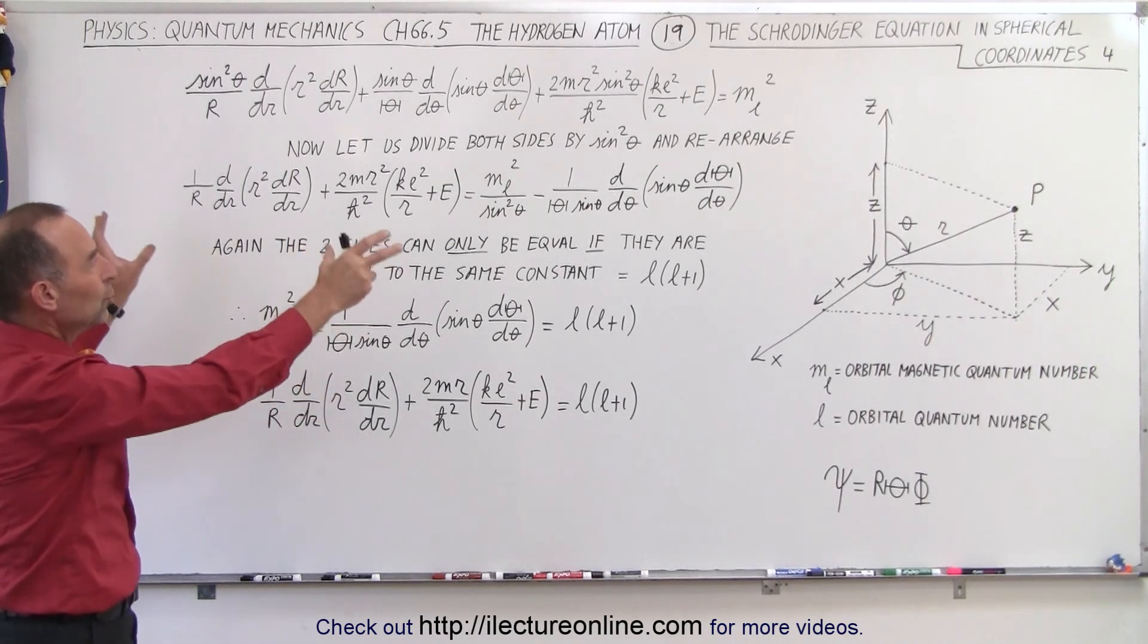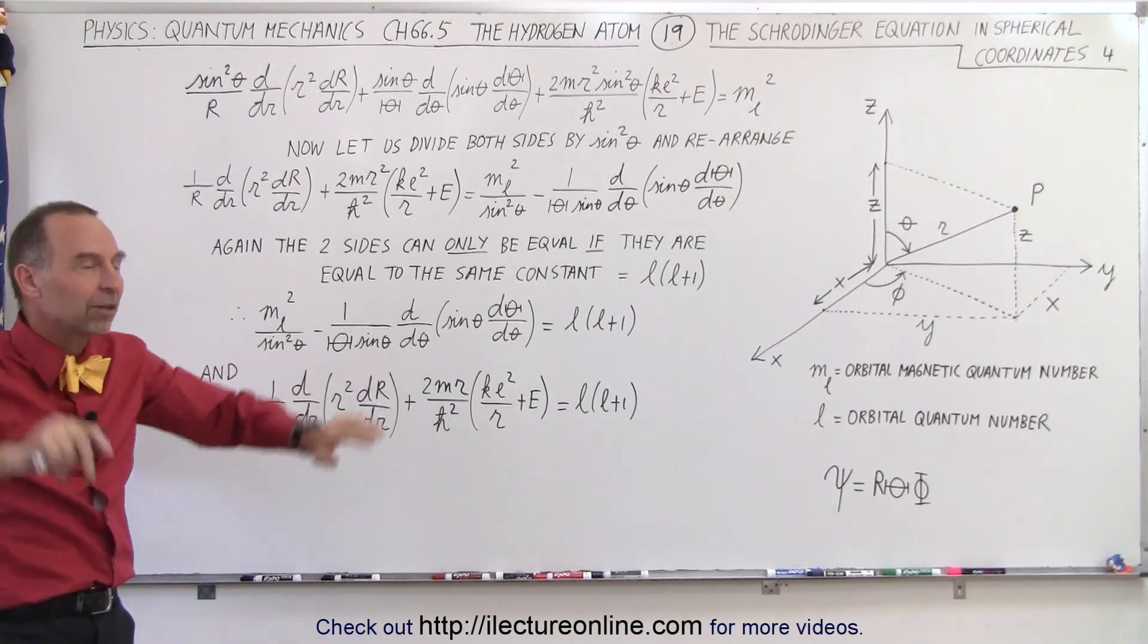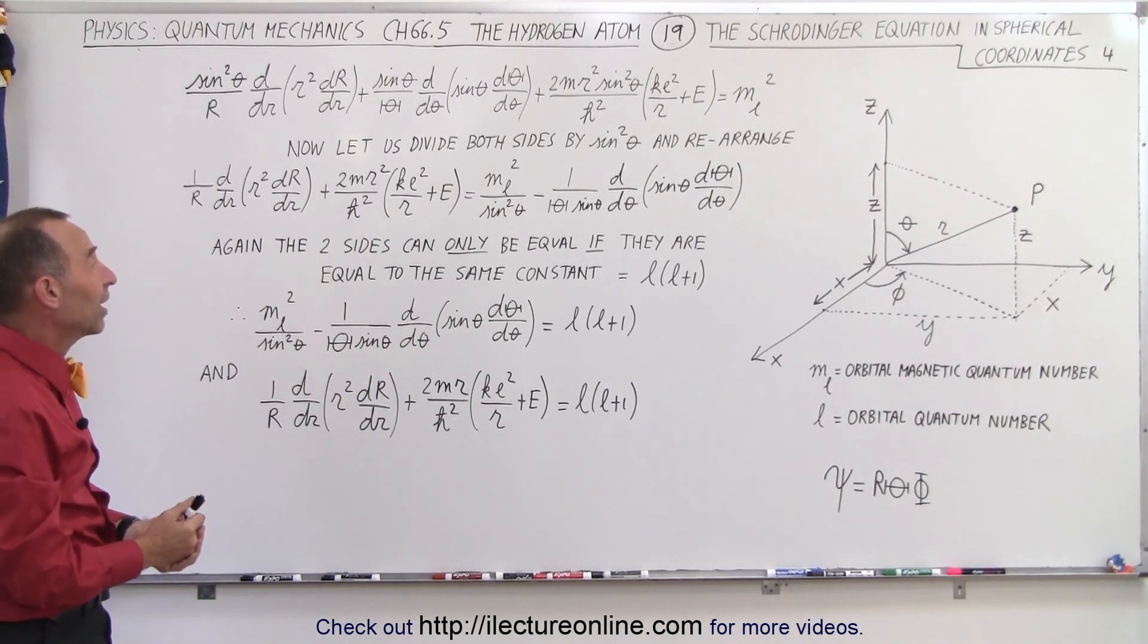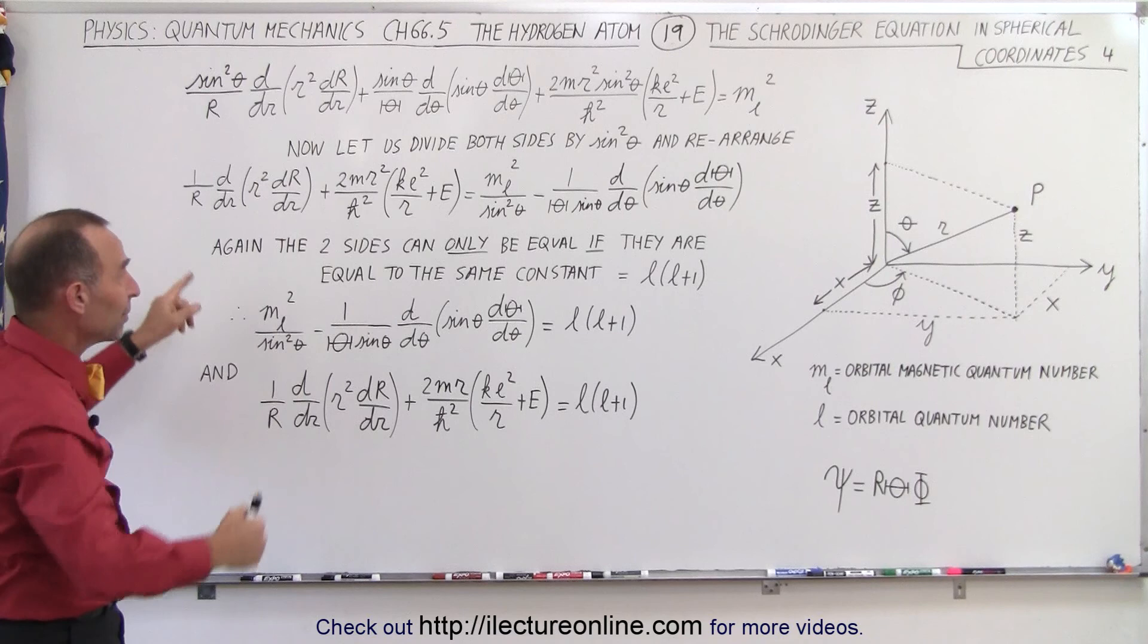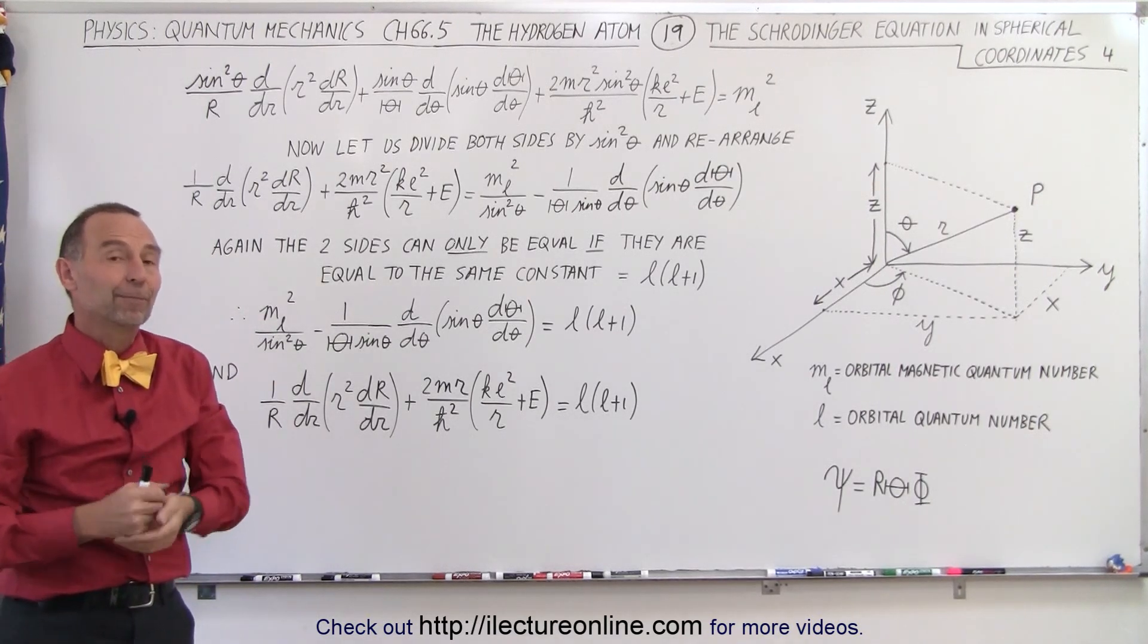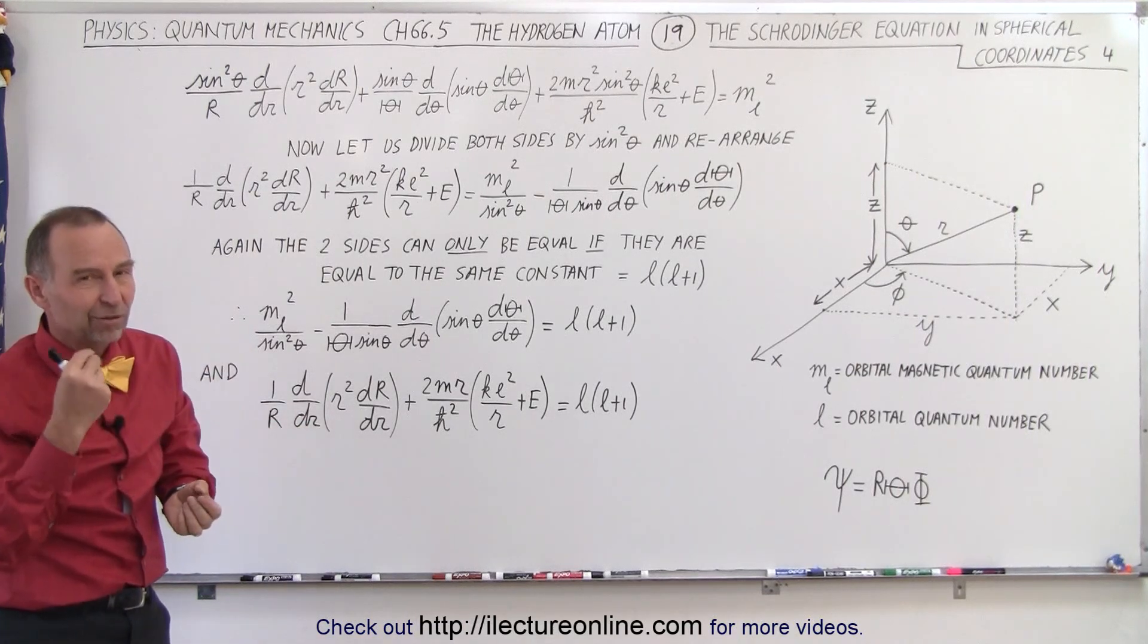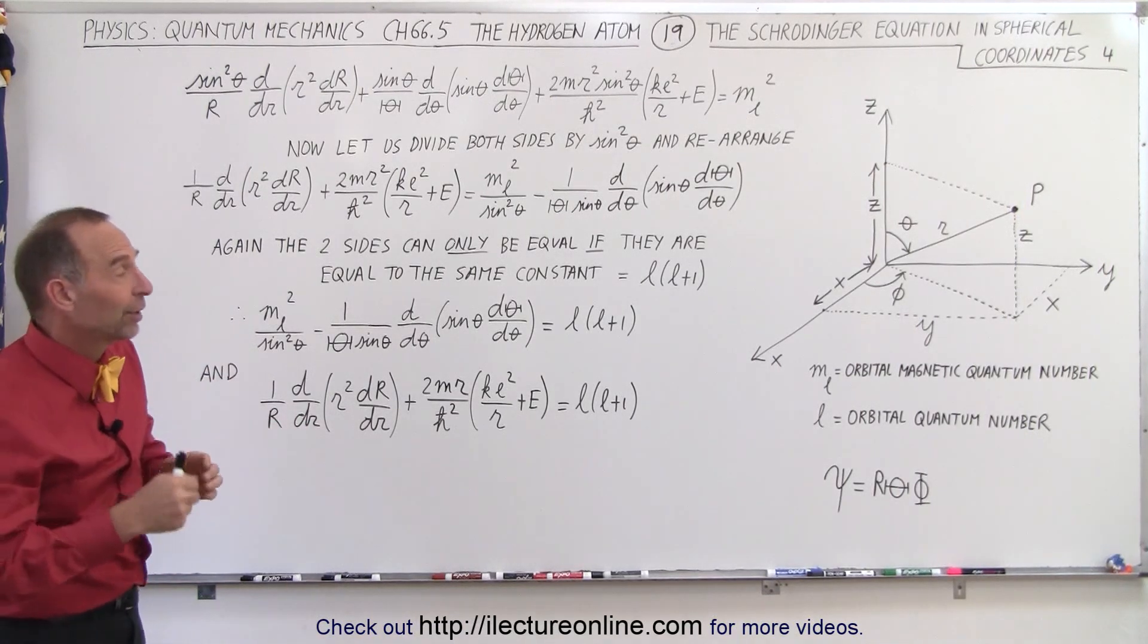Now, you can see on the left side we have nothing but the variable r. On the right side, we have nothing but the variable theta. We now have two portions of our equation, one on the left side, one on the right side, so we've separated the variables, and the only way that those two sides can be equal to each other is if they're equal to the same constant.